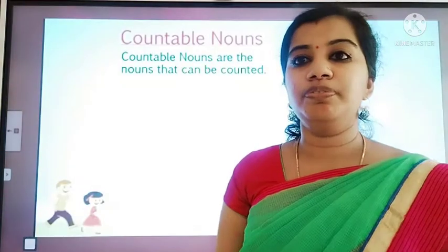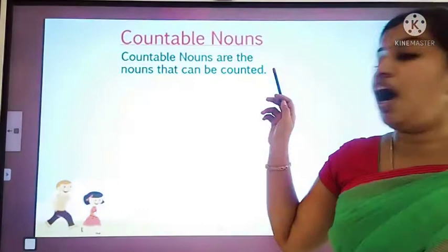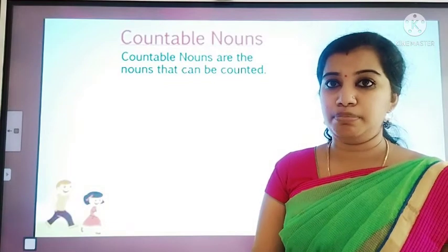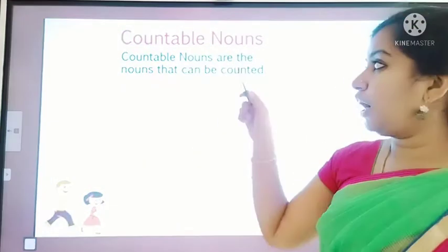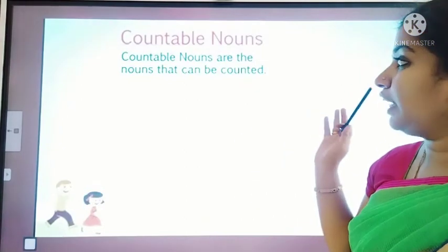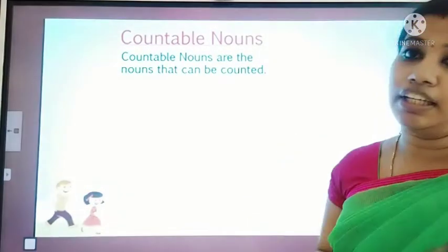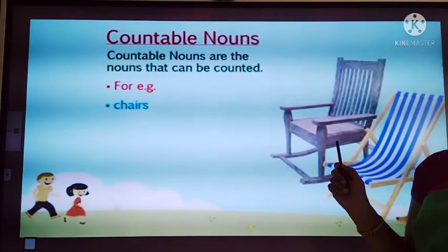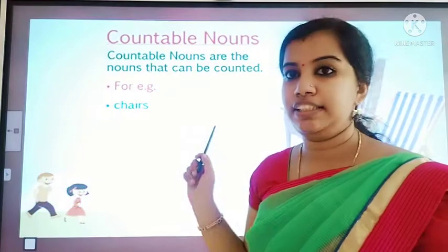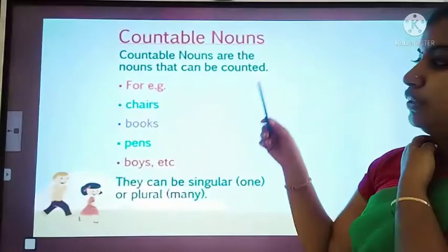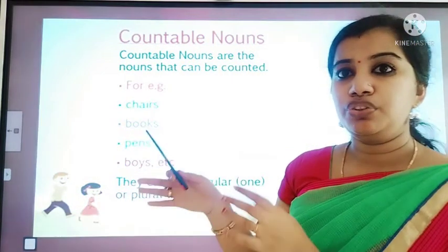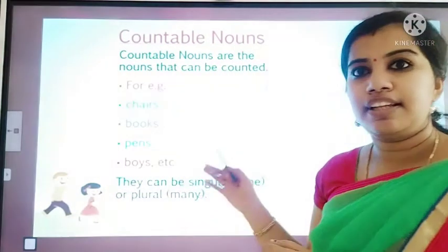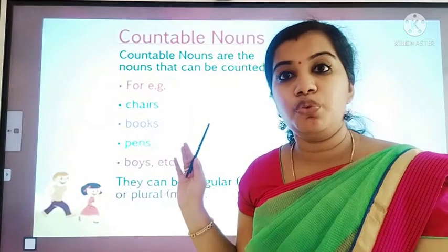What is a countable noun? Countable nouns are nouns that can be counted. We already learnt some examples. Look at the picture — chairs. How many chairs are here? Two. Chairs is an example. Books — how many books are here? Three. You can count: one, two, three. Three books are here. Nest, fence, and so on — these are some examples of countable nouns.